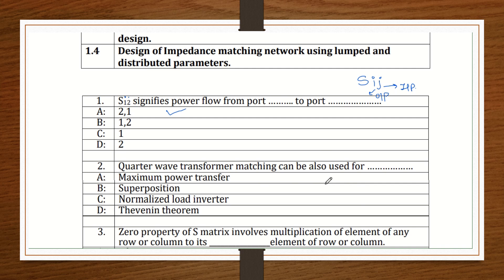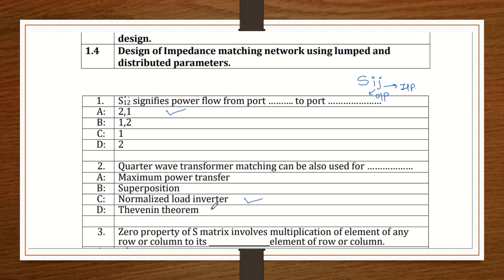Next, question 2: Quarter wave transformer matching can also be used for what? The options include maximum power transfer, superposition, normalized load inverter, or Thevenin's theorem. Maximum power transfer is clear — if there is matching, maximum power transfer occurs. A quarter wave transformer can also be used as an inverter. If you remember the expression Z0 = √(ZL × Zin), you can easily identify it as a normalized load inverter.